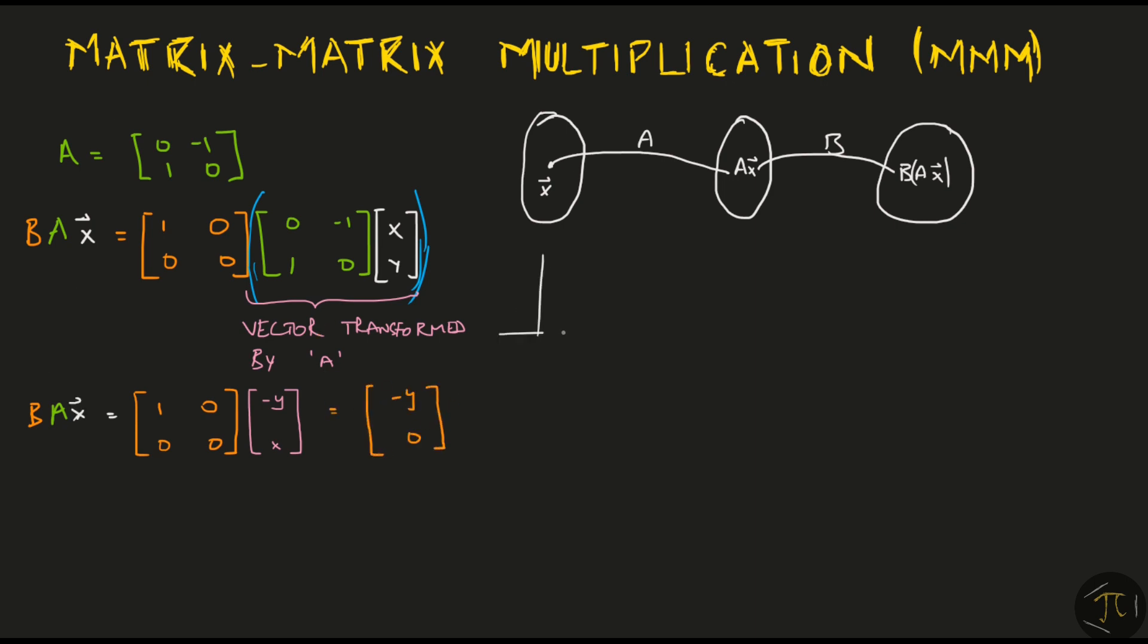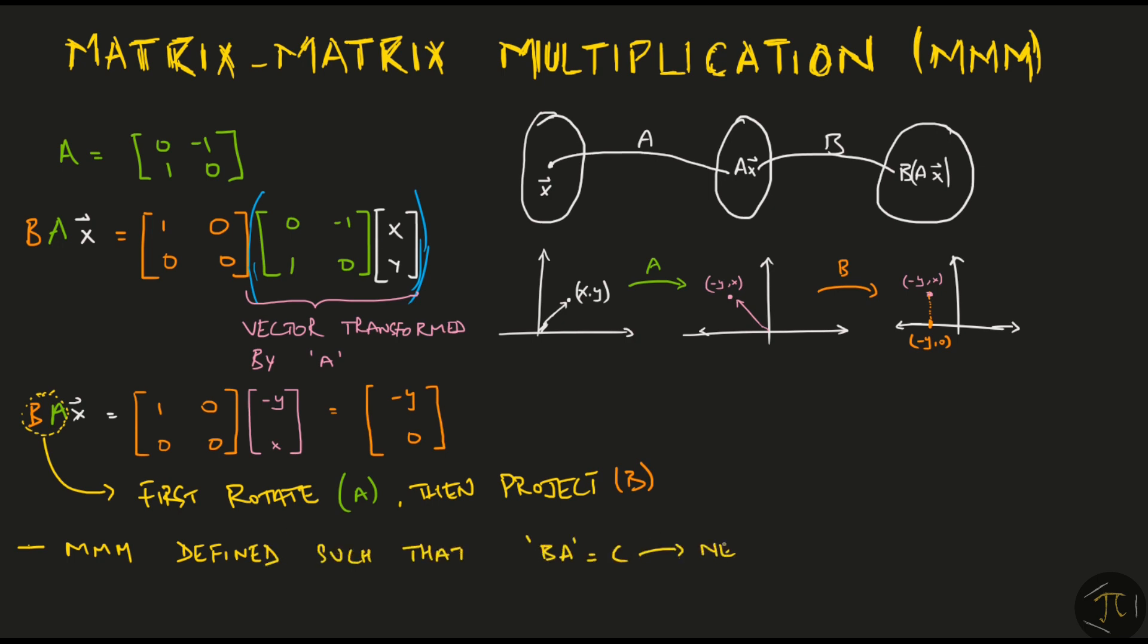Now we transform this vector minus y x by using the matrix B, and the algebraic calculation gives minus y 0 as the final output vector. Graphically, we started with the vector in R2, this got rotated by the matrix A, and the resulting vector got projected on the x axis by the matrix B. So B times A can be thought of first rotating a vector using A and then projecting it using B. Matrix matrix multiplication is defined such that the product BA is equal to a new matrix C that does the two-step transformation in one go. The input vector x directly goes to the final vector BAx.